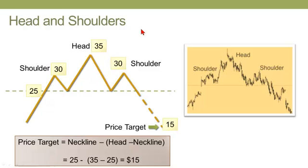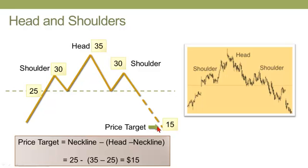Head and shoulders is probably the most popular reversal chart pattern. Two key things not shown on the slide: the first is that these patterns occur in the context of trends. The first thing about the head and shoulders we want to see is evidence of a visible upward trend, because the upward trend is getting reversed by the pattern into a new downward trend. So upward trend, pattern reverses into a downward trend.